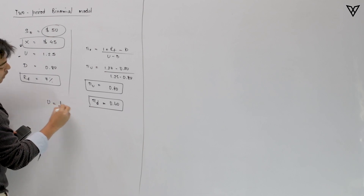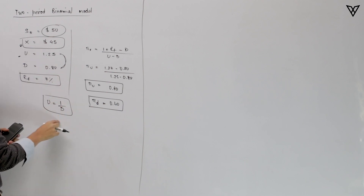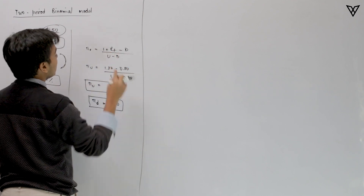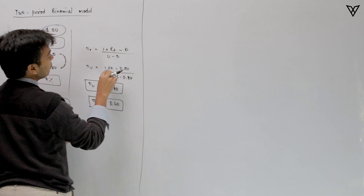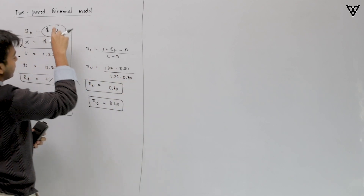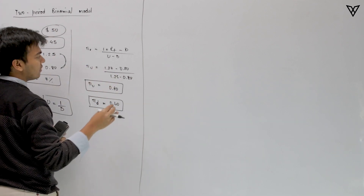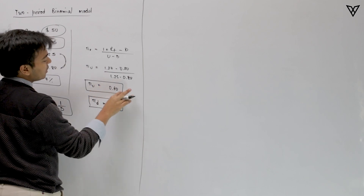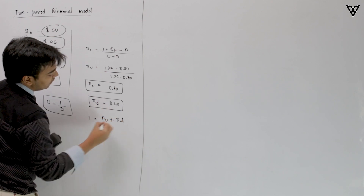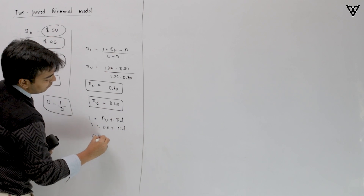The up factor equals 1 divided by the down factor, so you can verify the relationship between the two using that formula. The probability of the stock going up is calculated as (1 + rf − d) / (u − d), which gives us (1.07 − 0.8) / (1.25 − 0.8). The probability of up, π_u, is 0.6. Since π_u + π_d = 1, the probability of down, π_d, is 0.4.